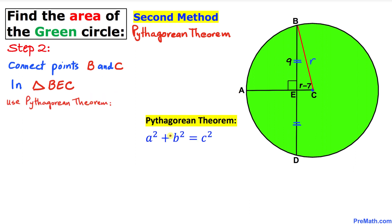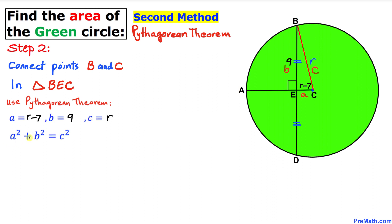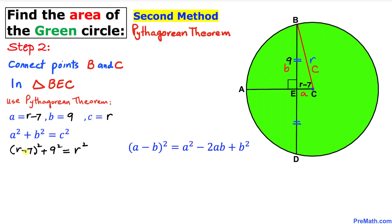The Pythagorean theorem states A squared plus B squared equals C squared. Labeling the horizontal side as A, the vertical side as B, and the hypotenuse BC as C, we fill in: (R minus 7) squared plus 9 squared equals R squared. Expanding the binomial using the (A minus B) squared formula gives R squared minus 14R plus 49.